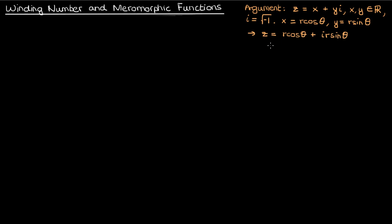If we express x and y using polar coordinates, we can use Euler's formula to write z as r times e to the i theta. We've done this many times so far in our series, so if you've been following along you should be no stranger to this. The argument of the complex number z, denoted by arg(z), is then equal to the theta in the polar representation of that complex number. It's the angle that a complex number makes relative to the positive real axis.